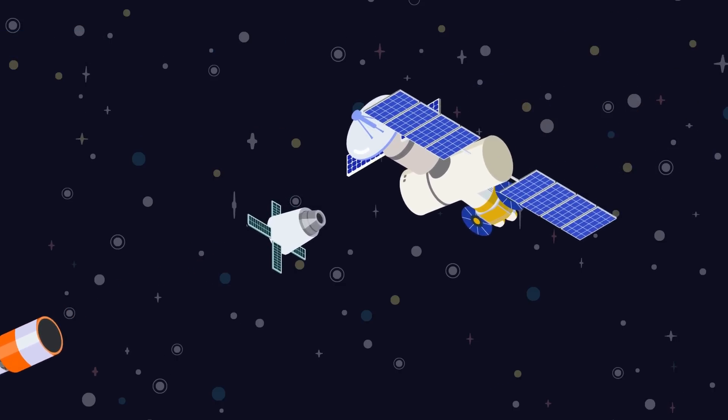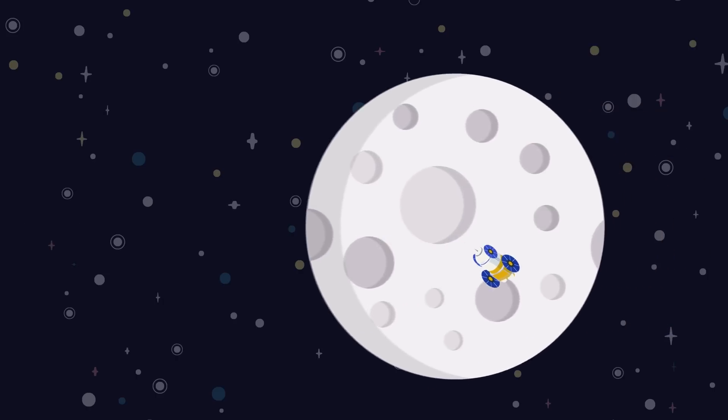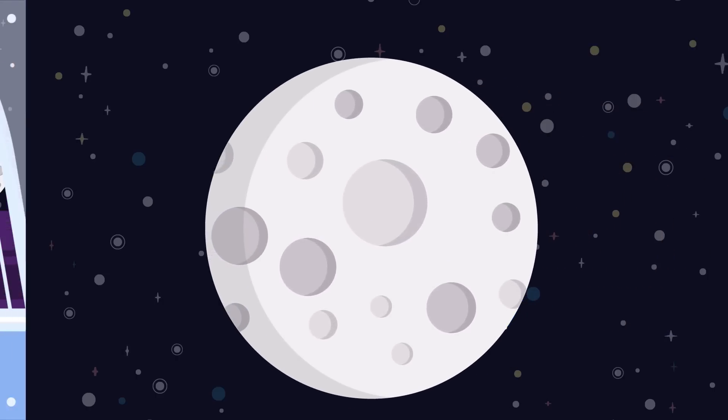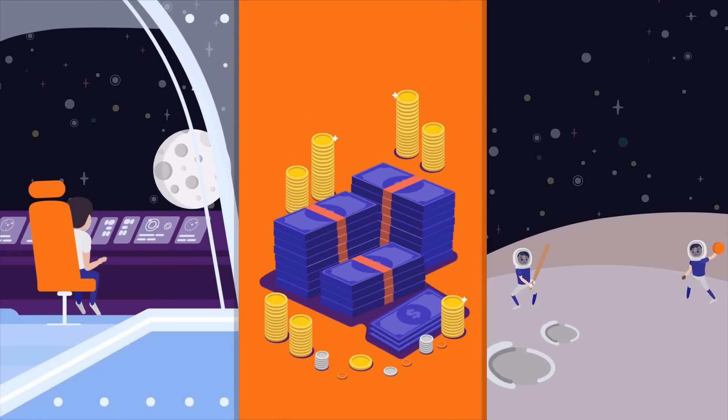This time, we will be trying to implement permanent human presence on the moon, and we are actually very determined to do so. Why is this so important? Is it economically feasible? And what are we actually going to be doing there?